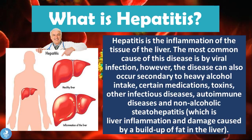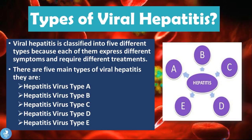Viral hepatitis is classified into five different types because each expresses different symptoms and requires different forms of treatment. The five main types are hepatitis virus type A, B, C, D, and E. Videos on A, B, C, and D have already been covered, and in today's video we're going to focus on hepatitis virus type E.